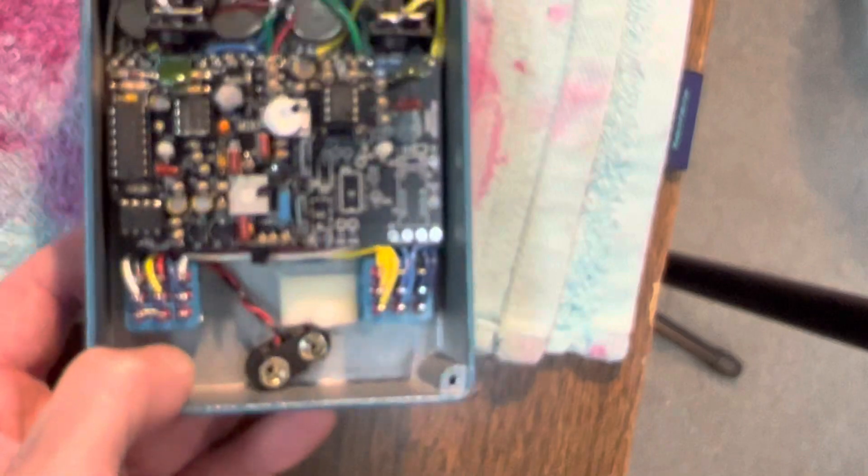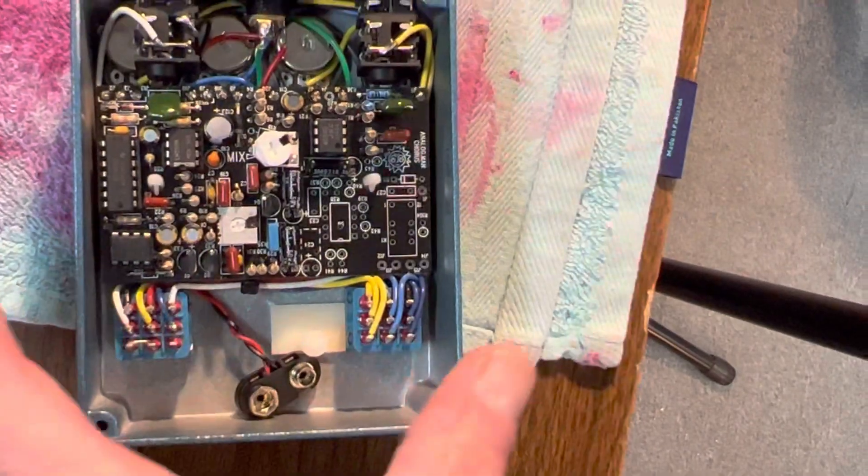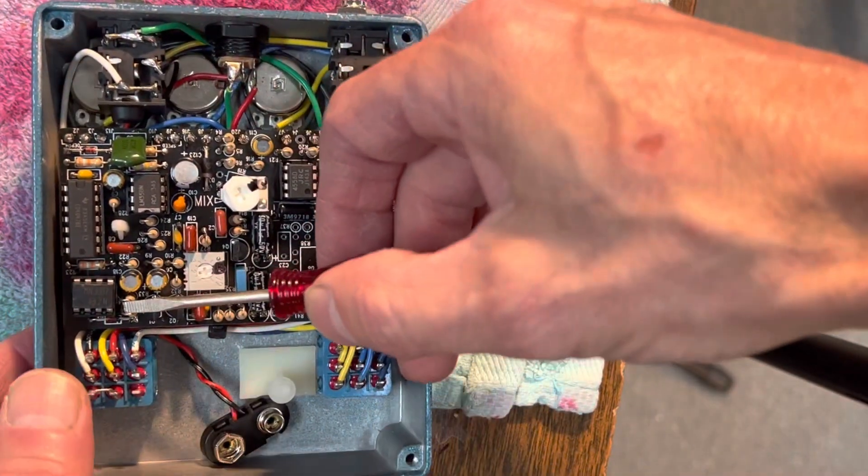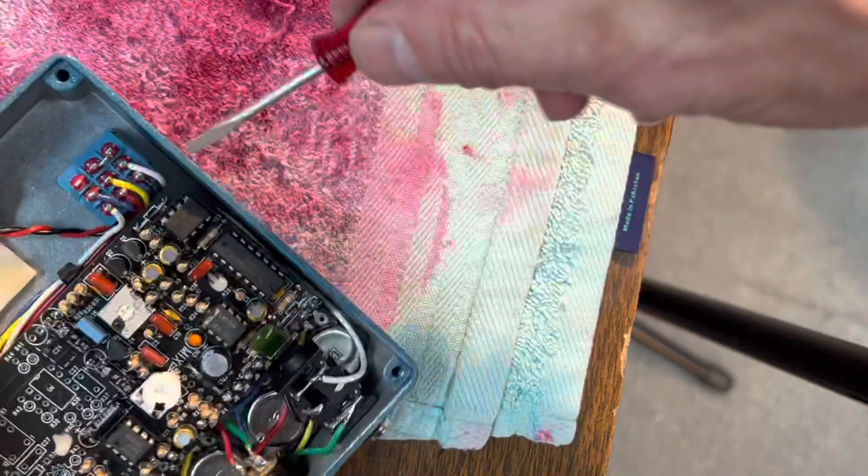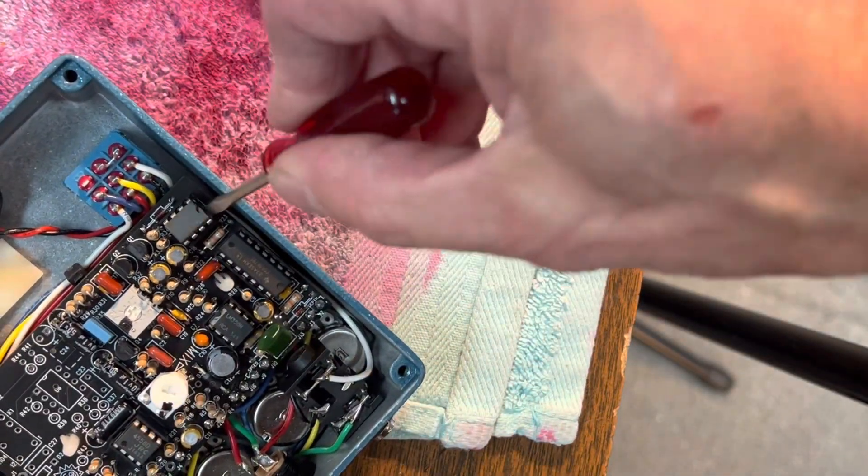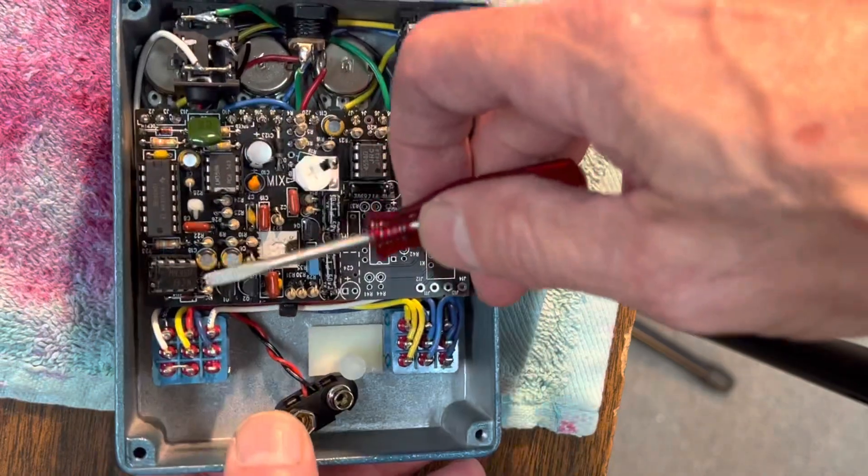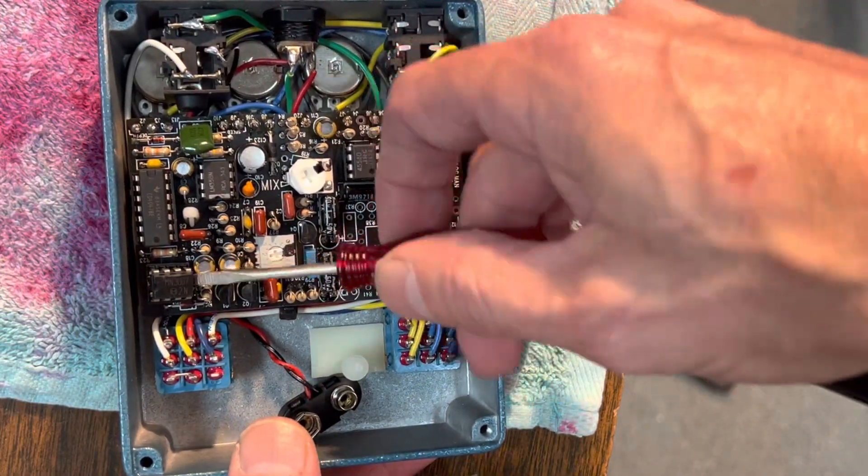So to remove it, basically just pry it up carefully. What I'll do is work a little bit on one side with a small screwdriver, then a little bit on the other side and tilt it out so you don't destroy the legs, even though we're going to chuck this chip out.